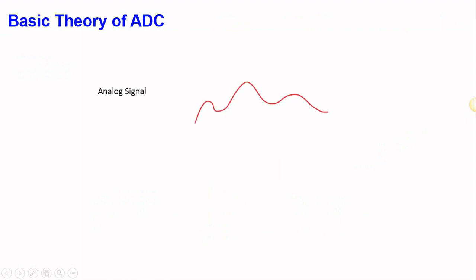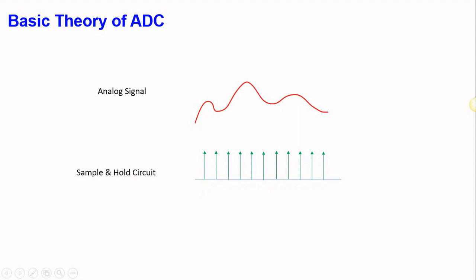Looking at the basic theory of ADC: we have an analog signal, and by using a sample and hold circuit, we convert this analog signal into a digital signal. The sample and hold circuit operates using pulses running at a sampling frequency, where each pulse has a short duration interval between two pulses.